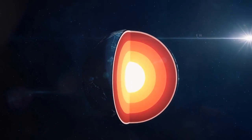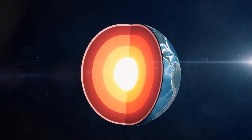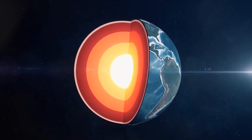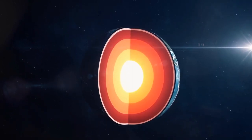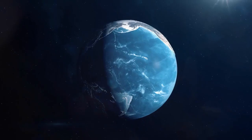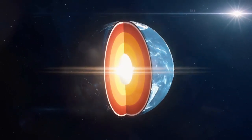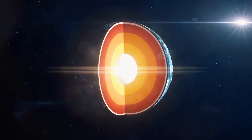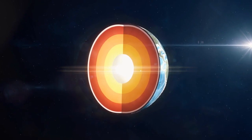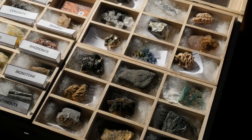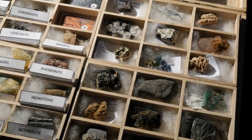Beneath the crust lies the mantle, which constitutes a significant portion of the Earth's volume. The mantle extends from the crust to about 1,800 miles (2,900 kilometers) below the Earth's surface. It is primarily composed of silicate rocks, rich in minerals like olivine and pyroxene.